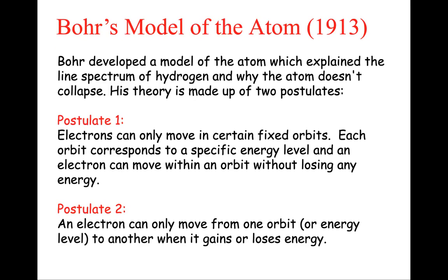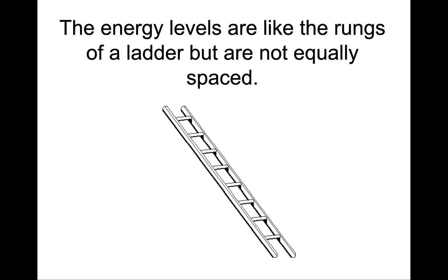He postulated that electrons can only move in certain fixed orbits, each orbit corresponding to a specific energy level. An electron can only move within an orbit without losing any energy. An electron can only move from one orbit to another when it gains or loses energy. The energy levels are much like the rungs of a ladder but they are not equally spaced.